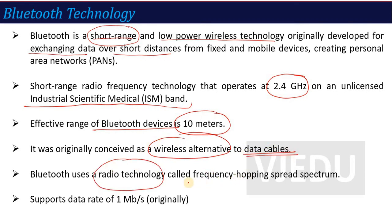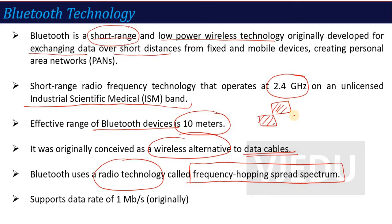Bluetooth uses a radio technology called Frequency Hopping Spread Spectrum (FHSS). In this technique, one user is assigned a particular frequency band for a particular time interval. Once that duration is over, the frequency band switches to the next frequency band assigned to the next time interval. So data is transferred in different frequency domains — this is called frequency hopping. Bluetooth technology supports a data rate of 1 Mbps originally.